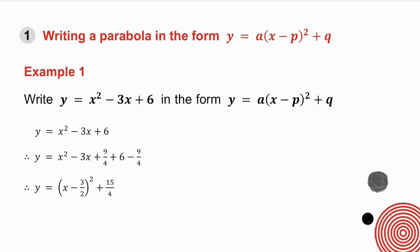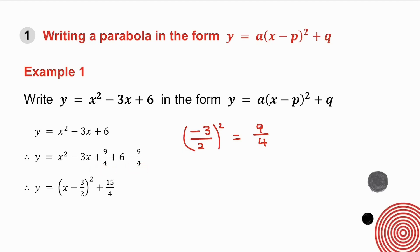We take the equation y equals x squared minus 3x plus 6. We take the coefficient of x which is minus 3, halve it and square that — giving us 9 over 4. So we add 9 over 4 and subtract 9 over 4. That equation is exactly the same as the one above. The first three terms form a perfect square and then we combine the last two terms. This is an extremely useful form — the turning point form.